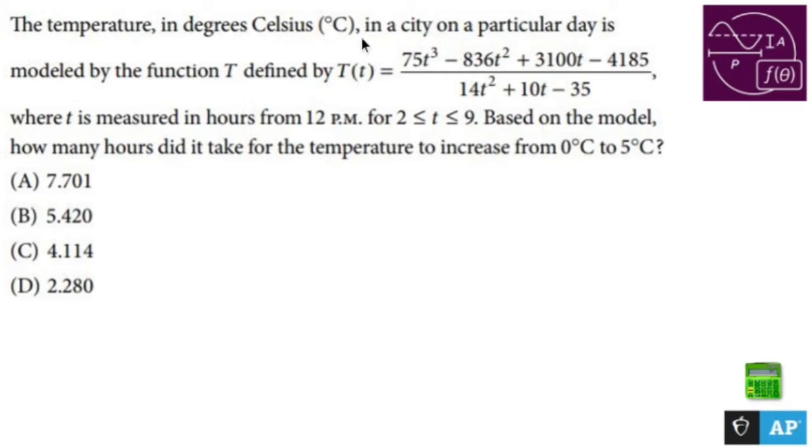The temperature in degrees Celsius in a city on a particular day is modeled by the function capital T defined by T of little t equals that, where little t is measured in hours from 12 p.m. for these bounds, t is between 2 and 9 including those. Based on the model, how many hours did it take for the temperature to increase from 0 degrees Celsius to 5 degrees Celsius?